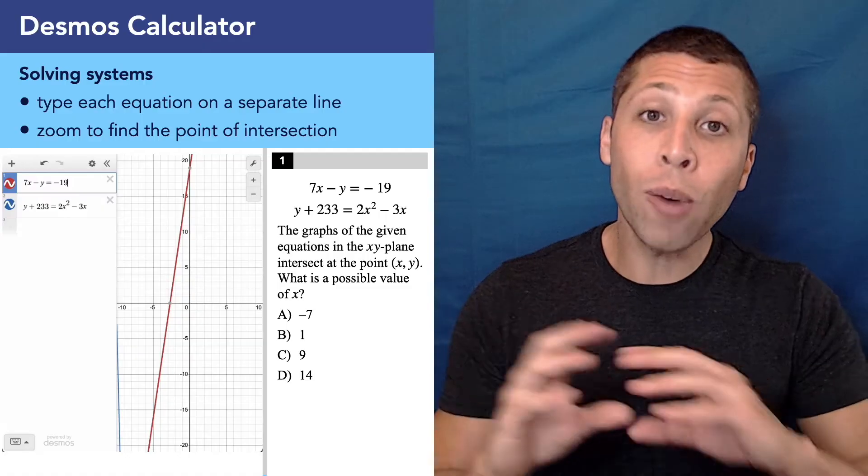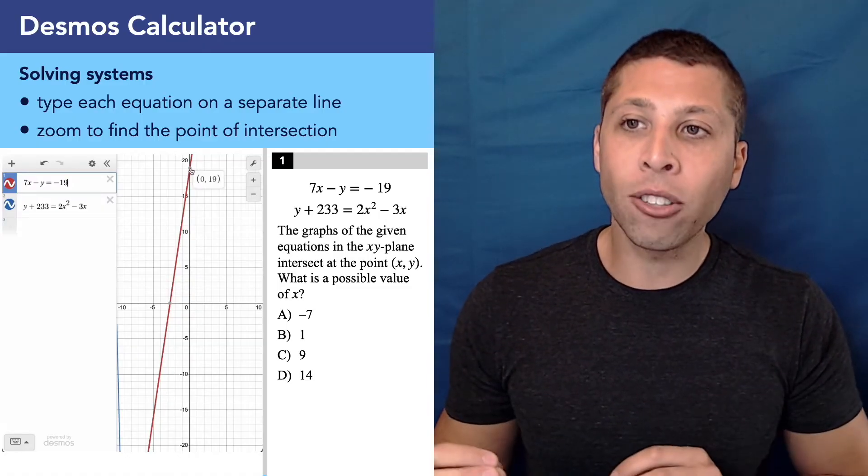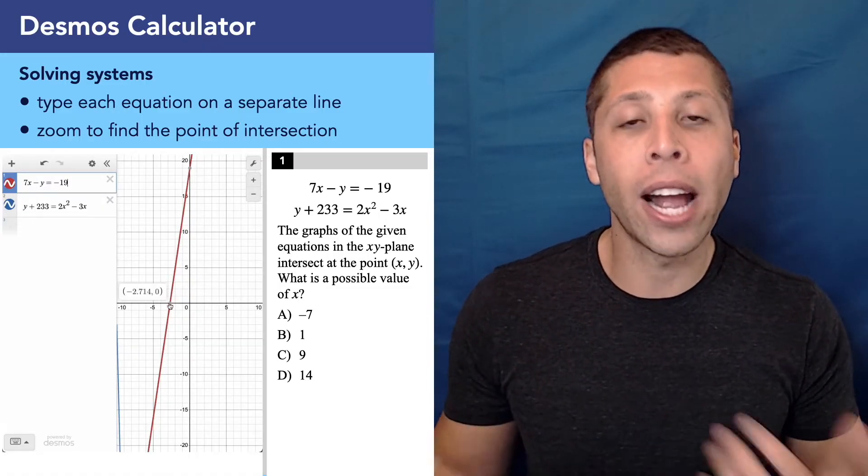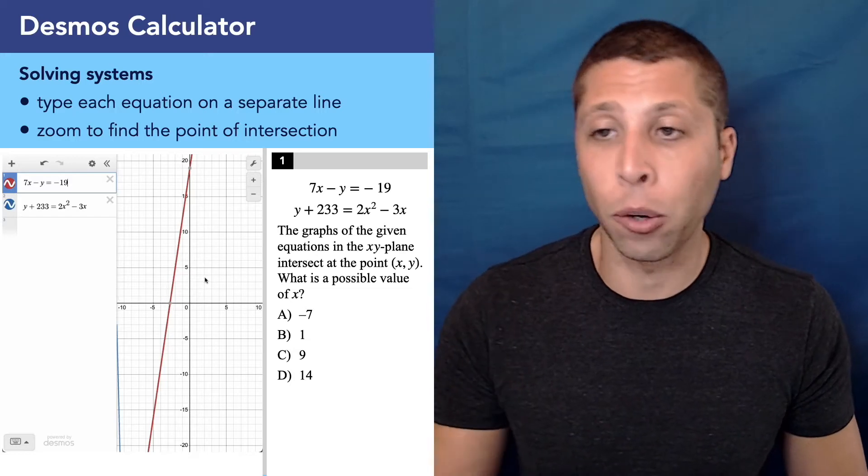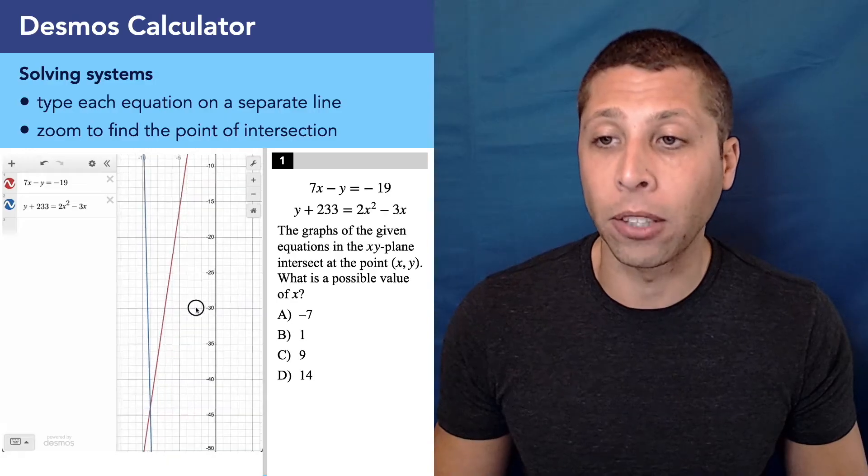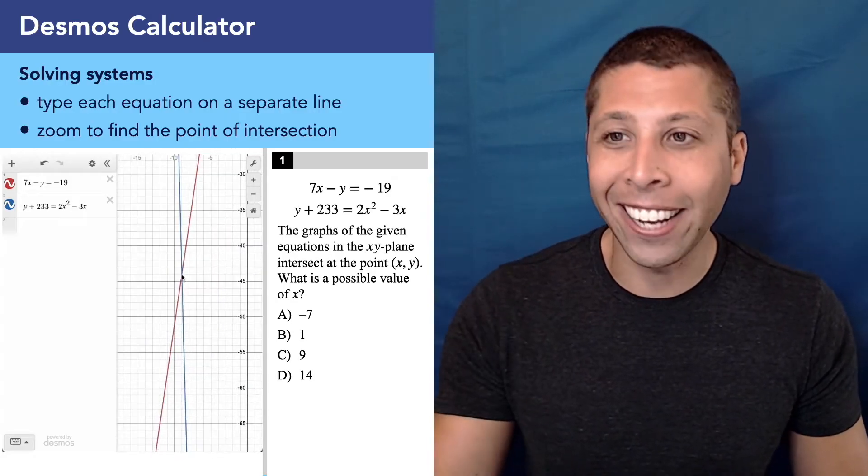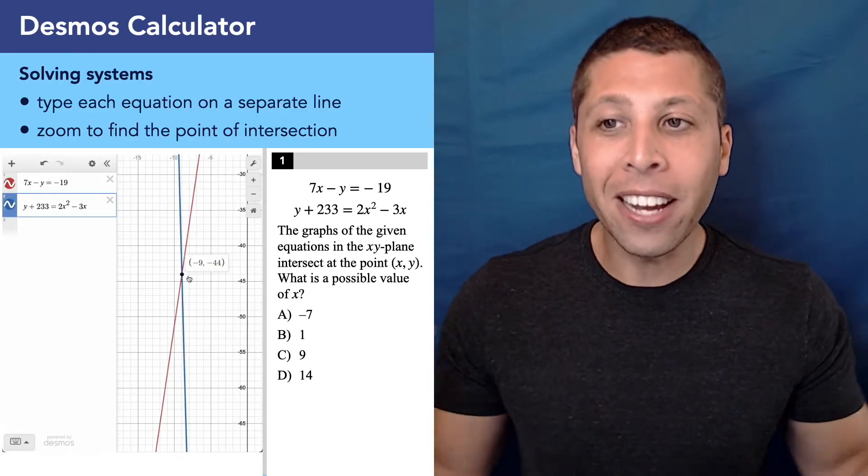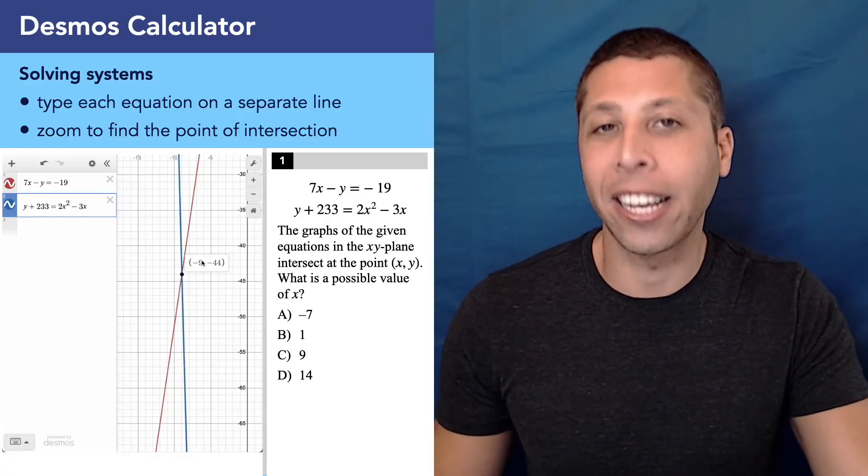And if you look at the red line here, you can see that it's also automatically calculating your X and Y intercepts. That's very convenient for other questions, but the blue line is off the screen, so we should scroll around until we find a point of intersection. And if you click it, you'll see it just pops up. It does the calculating for you, negative nine, negative 44.